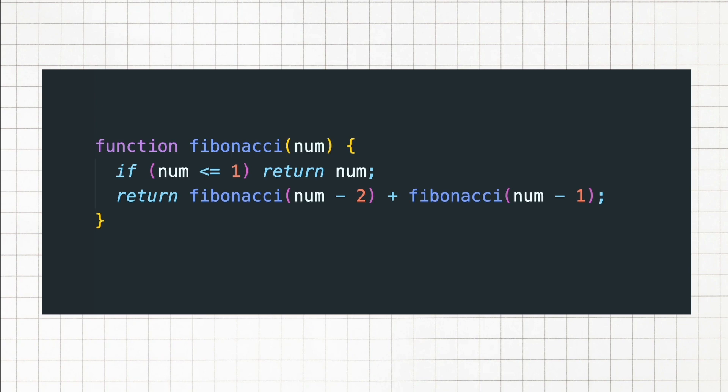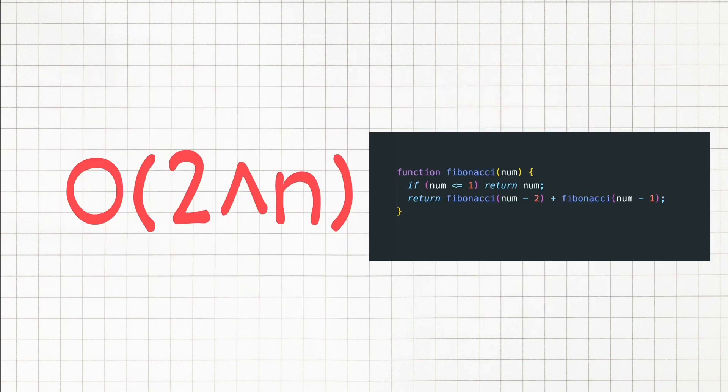this function recursively calculates the Fibonacci sequence, but it does it so inefficiently by recalculating lower numbers multiple times. Which leads us to a lot of extra calculations, hence the exponential time complexity.